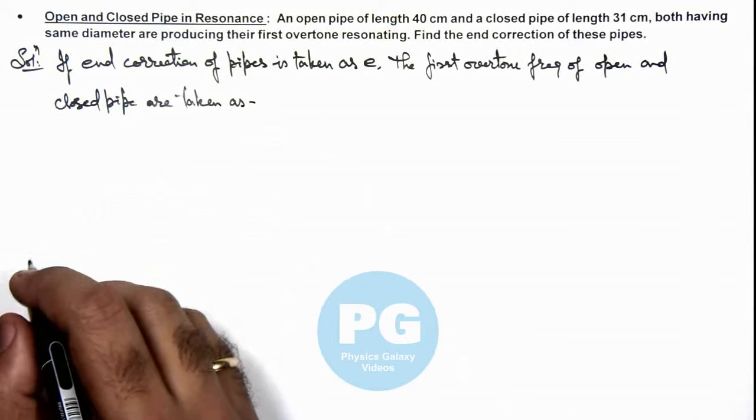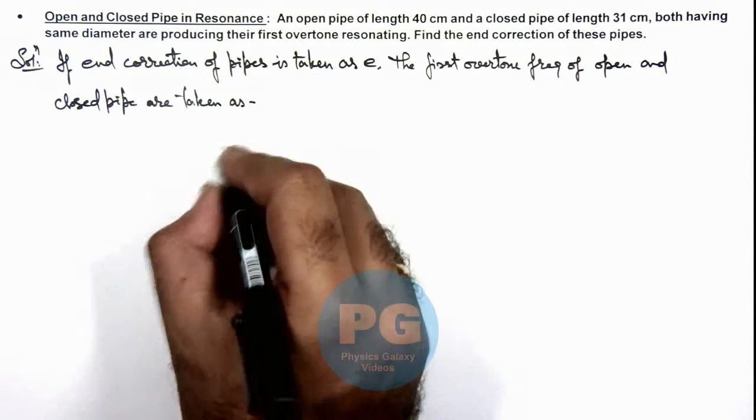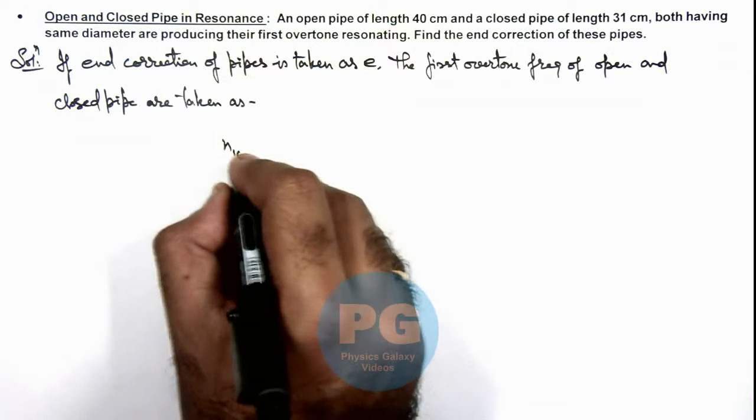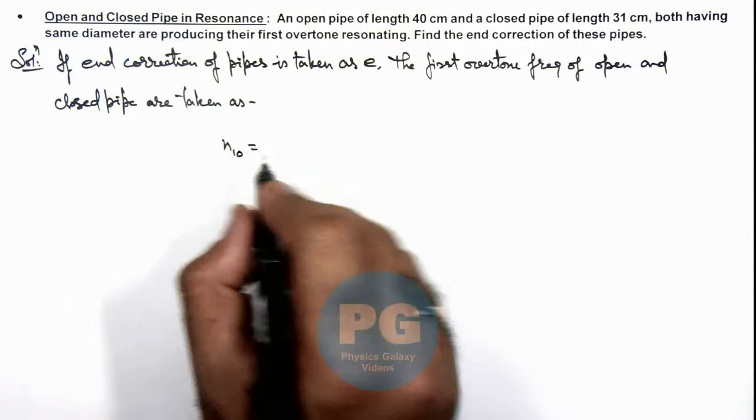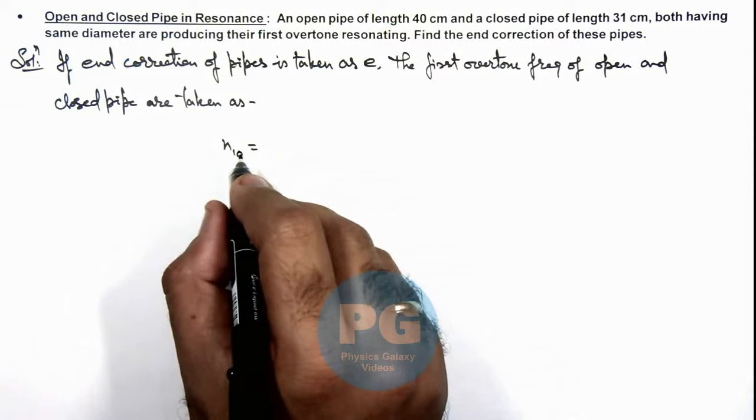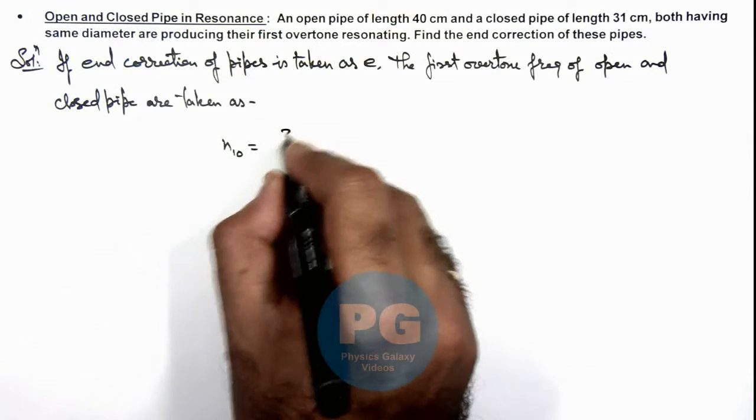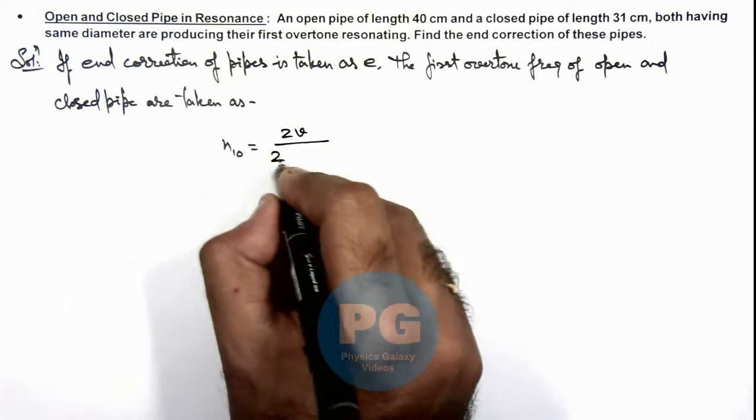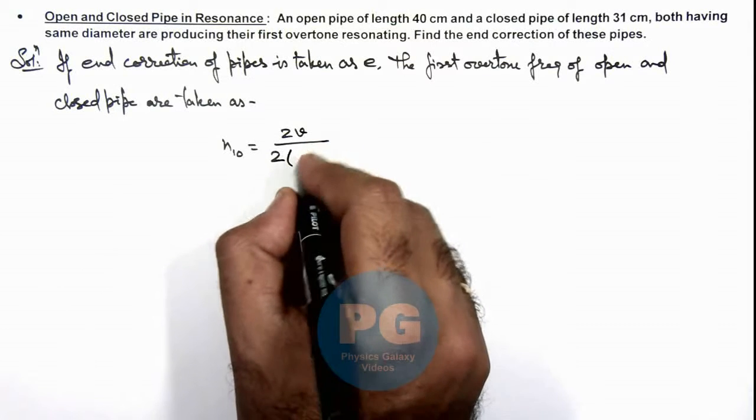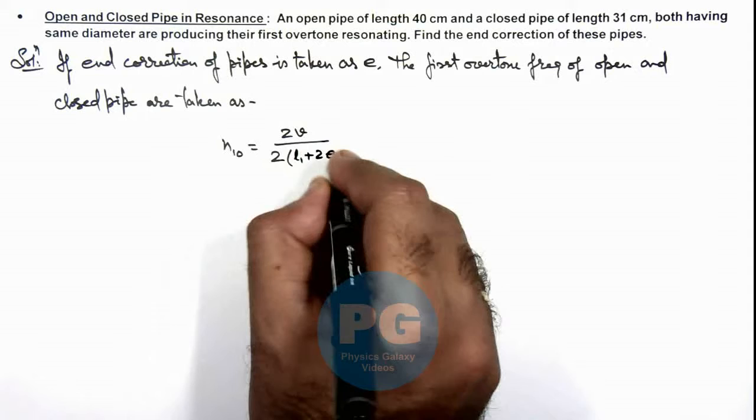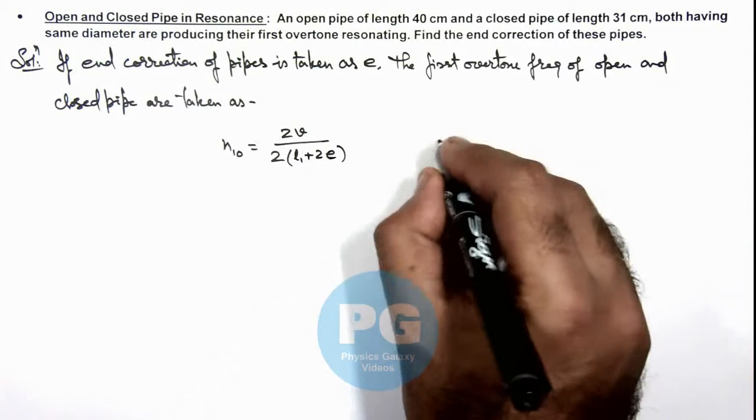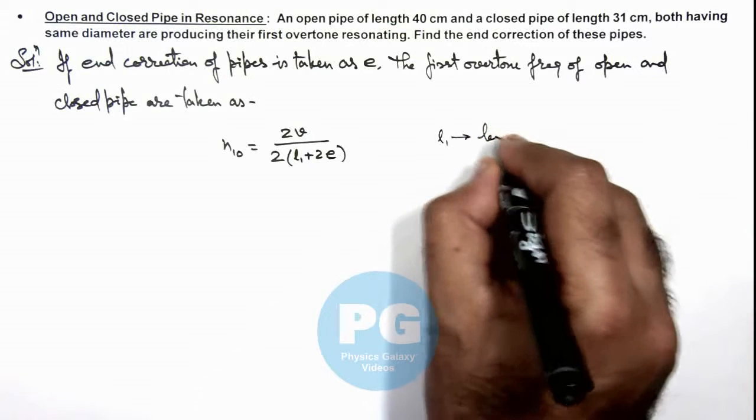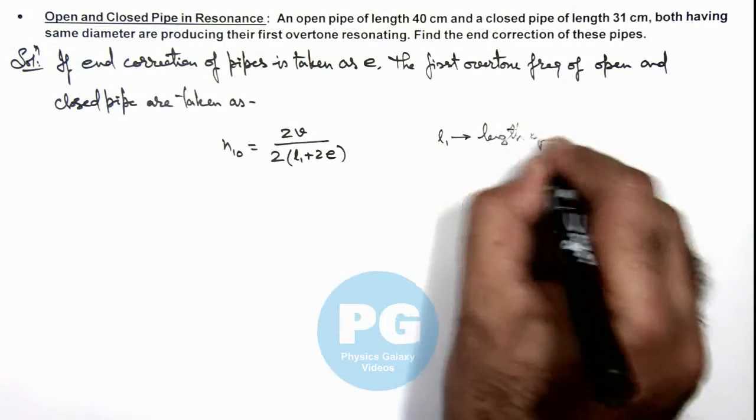Here we can write the first overtone frequency for the open pipe to be equal to: we know that for an open pipe the fundamental is v by 2L, so this will be v by 2 times (L1 plus 2e), where L1 is the length of the open pipe. We add twice the end correction because it is open at both ends.